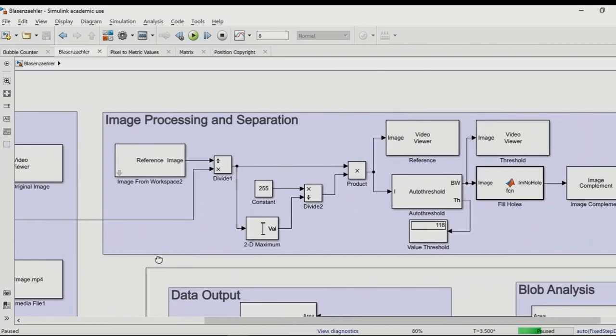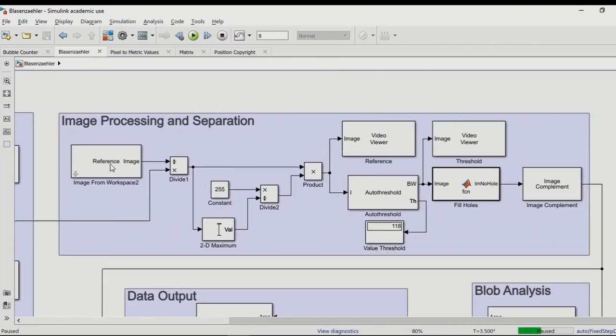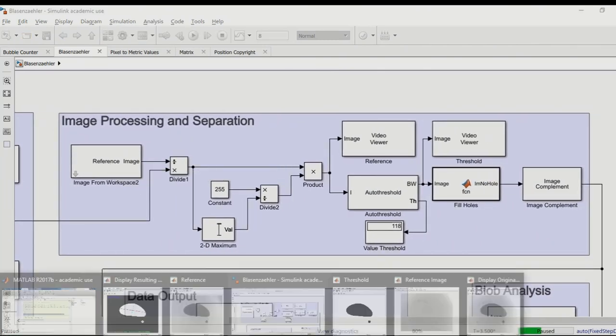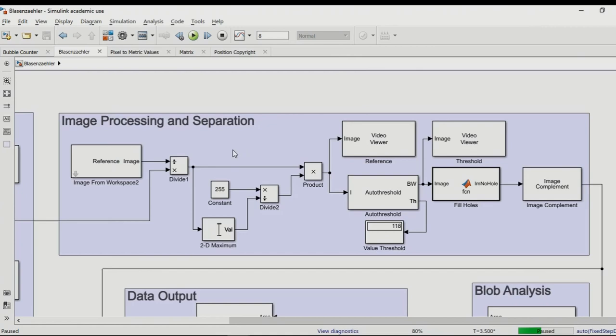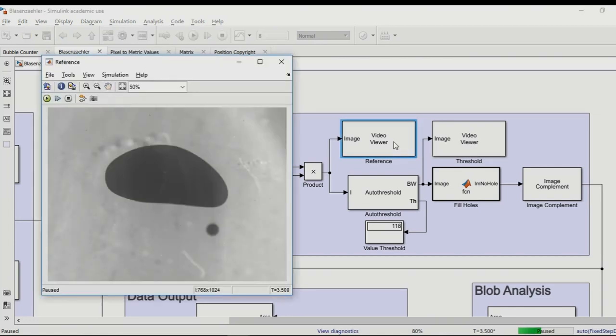In order to deal with these problems, we use a pre-taken image from the inside of the bubble column without any bubble. The input image is then divided by the pre-taken image and we do some calculus to get an integer image again, which looks like this. The background is now more homogeneous, which helps separating the bubbles from the background.